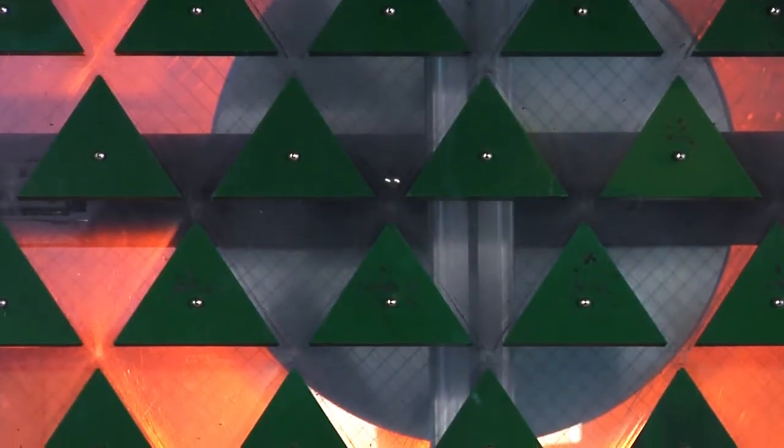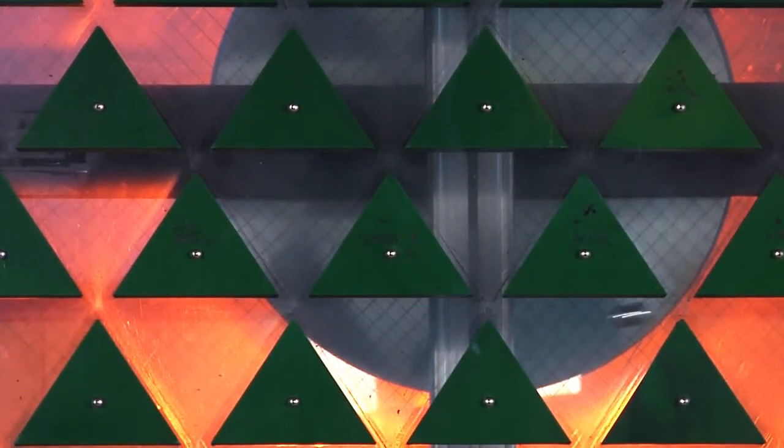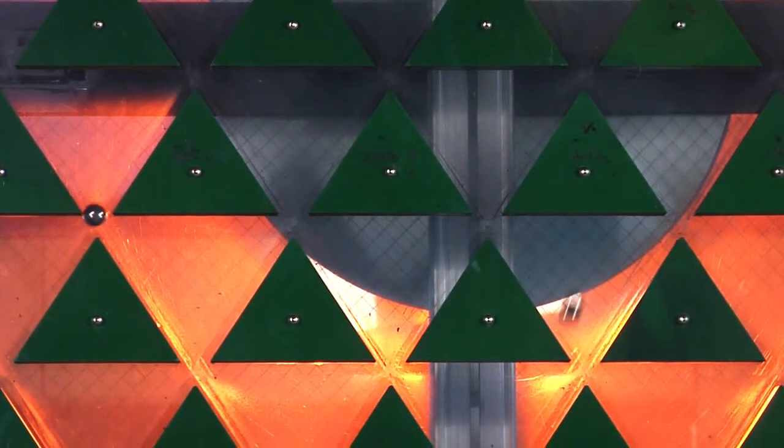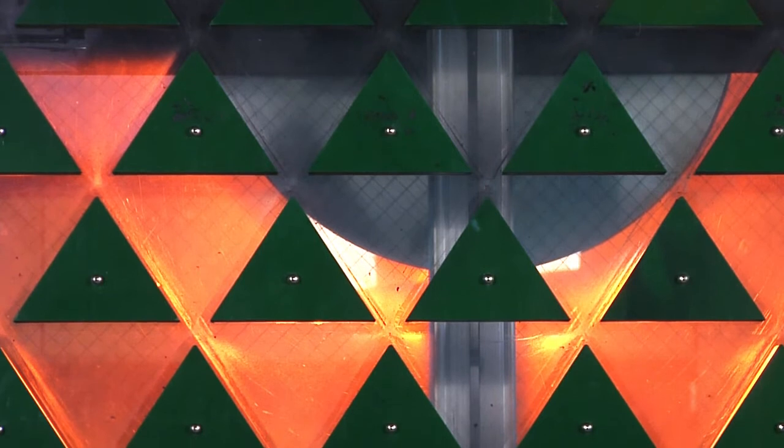When a ball arrives at each triangle it has an equal chance of rolling left or right. This is called random. Most of the balls randomly fall and end up near the middle of the distribution.